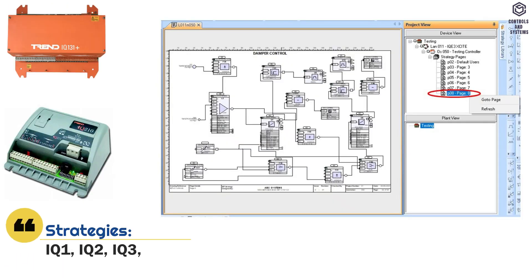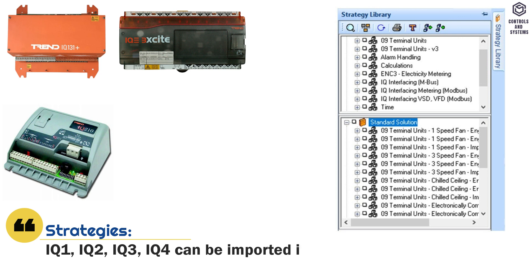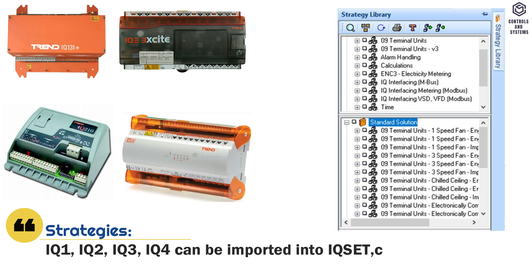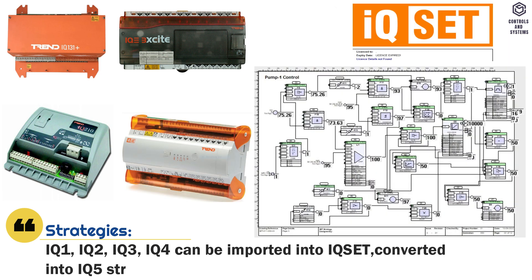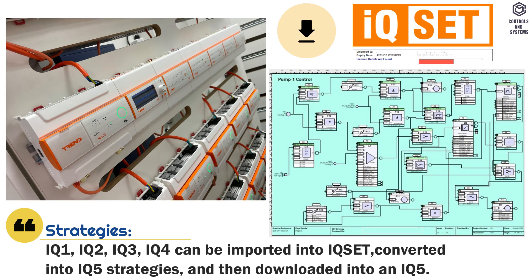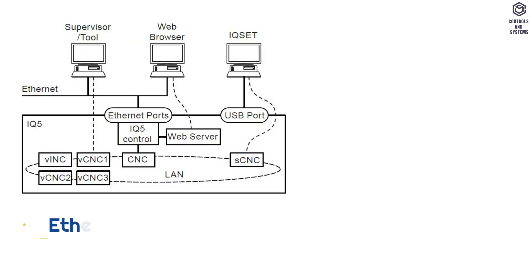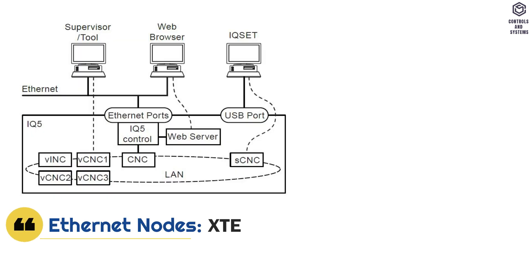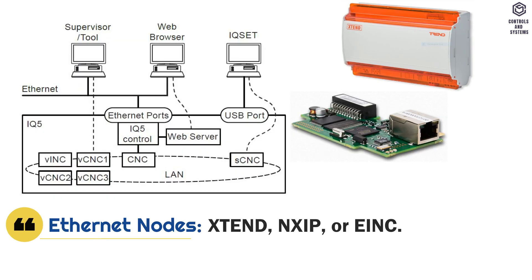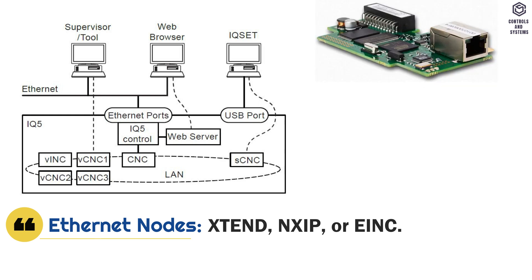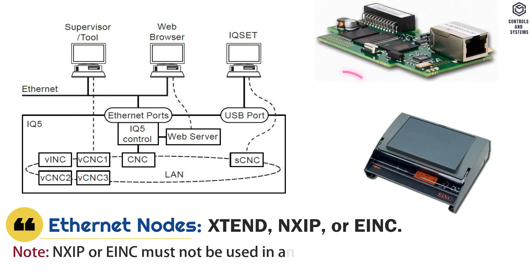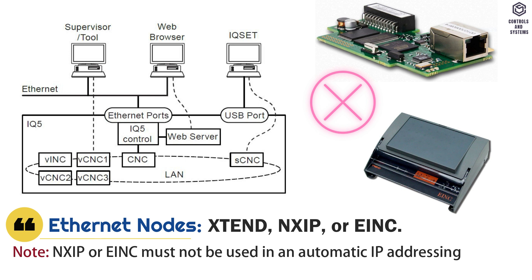Strategies: IQ1, IQ2, IQ3, IQ4 strategies can be imported into IQ Set, converted into IQ5 strategies, and then downloaded into an IQ5. Ethernet Notes: XTEND, NXIP, or EINC. Note: NXIP or EINC must not be used in an automatic IP addressing environment.